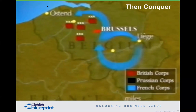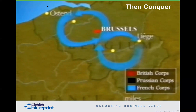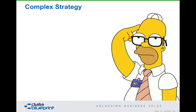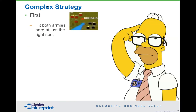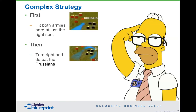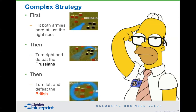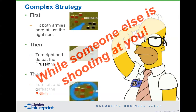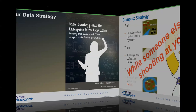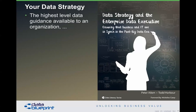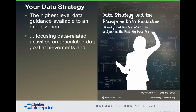Just splitting the armies did not actually win the war. The second part of the strategy was: after you split them apart, first go after the Prussians, then go after the British. This is more complicated than everyday low price: hit both armies in just the right spot, really hard; then turn right and defeat the Prussians; then turn left and defeat the British. Imagine trying to follow these directions while somebody is shooting at you with real bullets. Luckily we don't tend to have real bullets in our organizations. Your data strategy should be a very high-level guidance focused on specific data-related activities and articulated goal achievements, providing specific directional guidance when faced with uncertainty about organizational data assets.